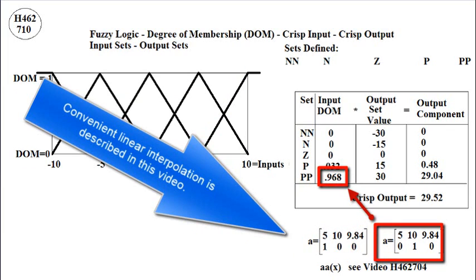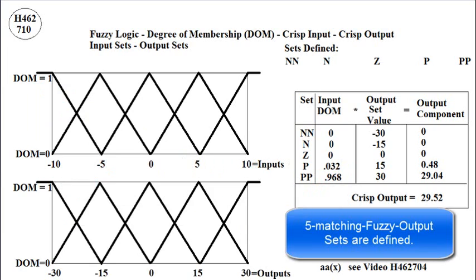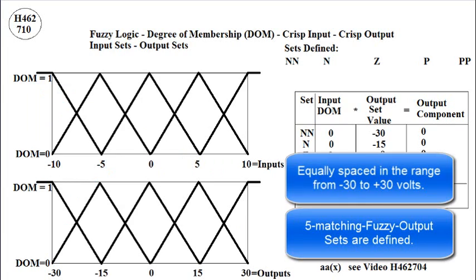Finally, the crisp output is calculated using fuzzy output sets. Five matching fuzzy output sets are defined, equally spaced in the range from negative 30 to plus 30 volts.